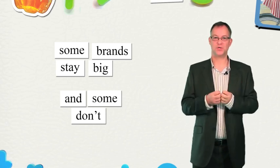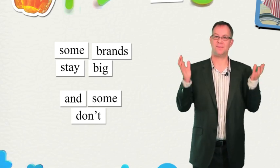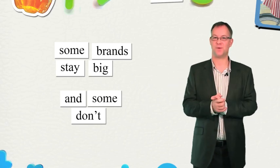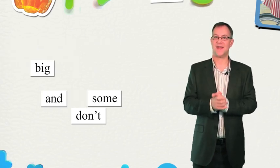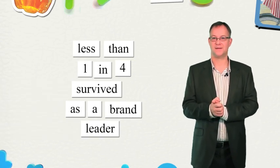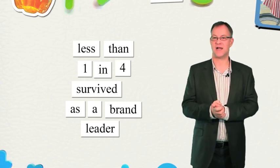Now remember, we are talking about the unassailable brands, the dominant category players with the heritage, with the shelf space, with the distribution network. And yet, less than one in four of them survived as a brand leader. I think that's a sobering thought for brand managers of brands like Airwick or Stella Artois today.